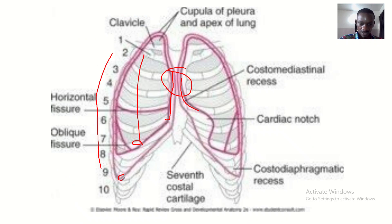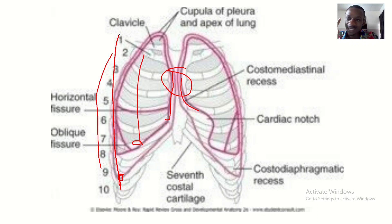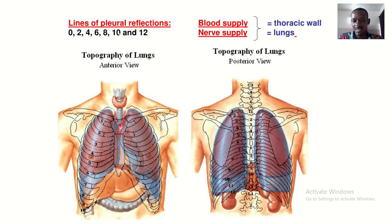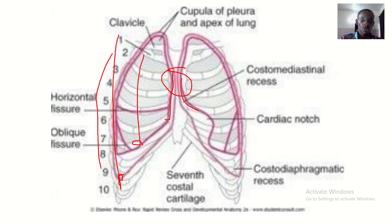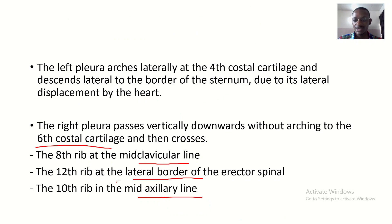This is the tenth rib at the mid-axillary line. So it crosses the eighth rib at the mid-clavicular line, the tenth rib at the mid-axillary line. As for the twelfth rib, it crosses at the lateral border of the erector spinae — the pleura goes to the lateral side there, so it's not fully shown, but it is at the lateral border of the erector spinae.